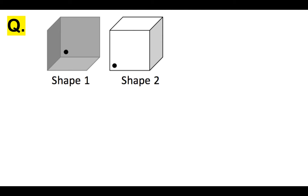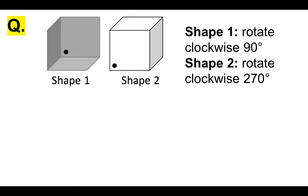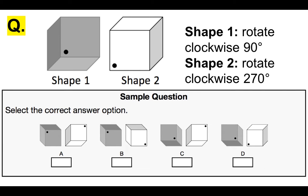First sample question. I'll talk you through this spatial reasoning type question, and then get you guys to have a go at them yourself. So you see on the left, you have SHAPE 1, and on the right, we have SHAPE 2. The question is: we have to rotate SHAPE 1 clockwise 90 degrees, and SHAPE 2 we have to rotate it clockwise again 270 degrees. Then we have to decide from options A, B, C, and D which position the shapes will be in once they have been rotated.